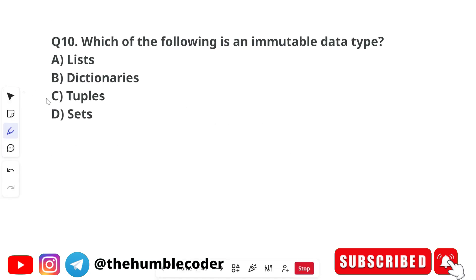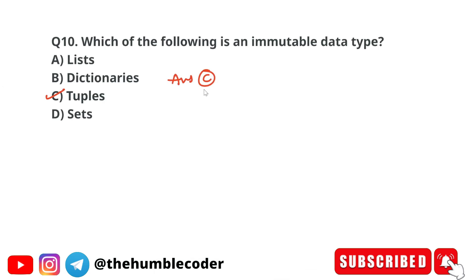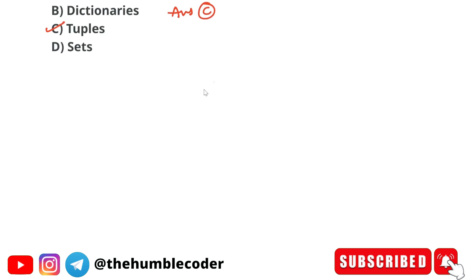Next question: which of the following is an immutable data type? Options are lists, dictionaries, tuples, and sets. The correct answer is option C, which is tuple. Tuples are immutable in Python, meaning their contents cannot be altered after creation.